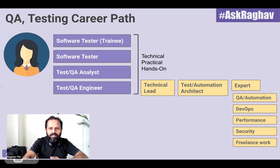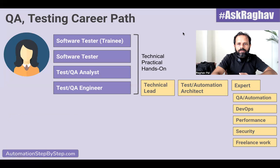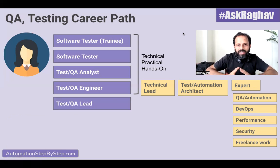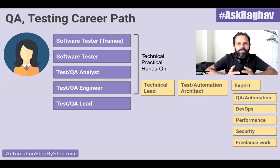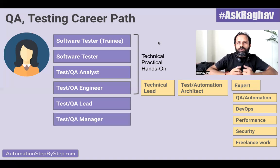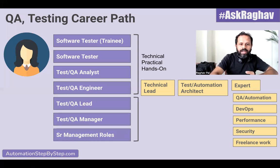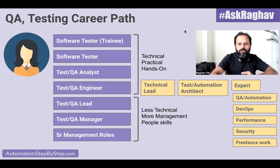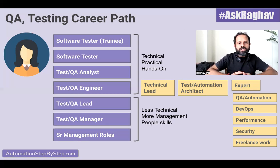That was the technical field. If you want to continue in the management line after the test or QA engineer role, you can become a test or QA lead. Here you will have more management work — management of team, people, and resources — and less technical hands-on work. Then you can grow into a test or QA manager, which is again more people and management. Then you can go into senior management roles in the organization. So this path is less technical and more focused on management and people skills.